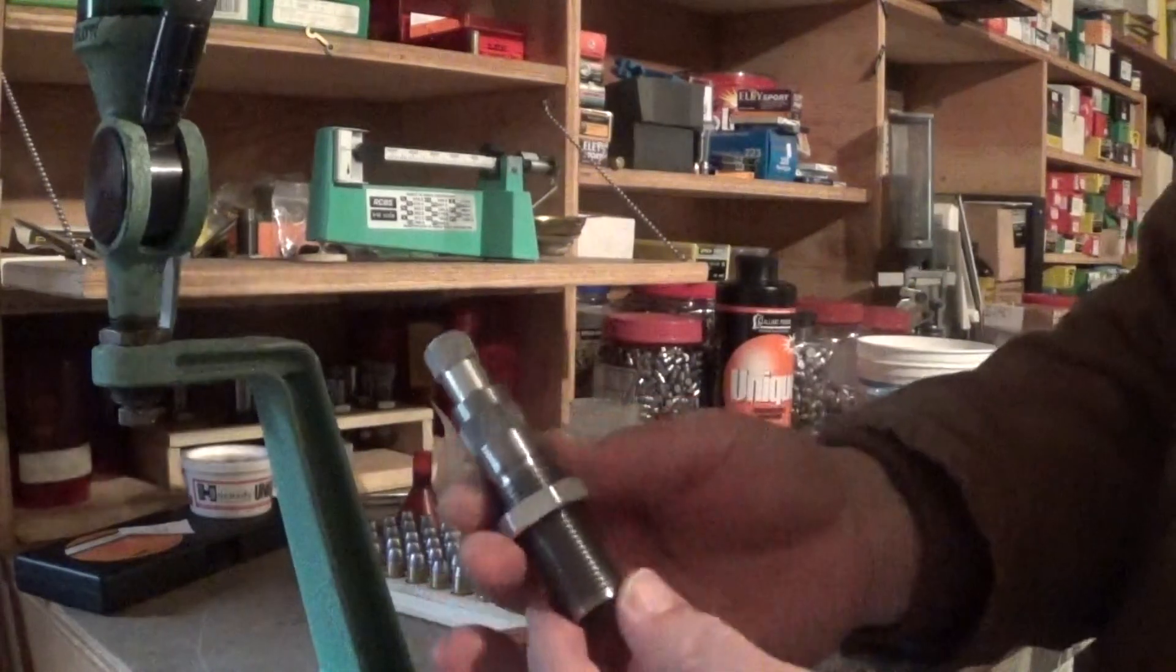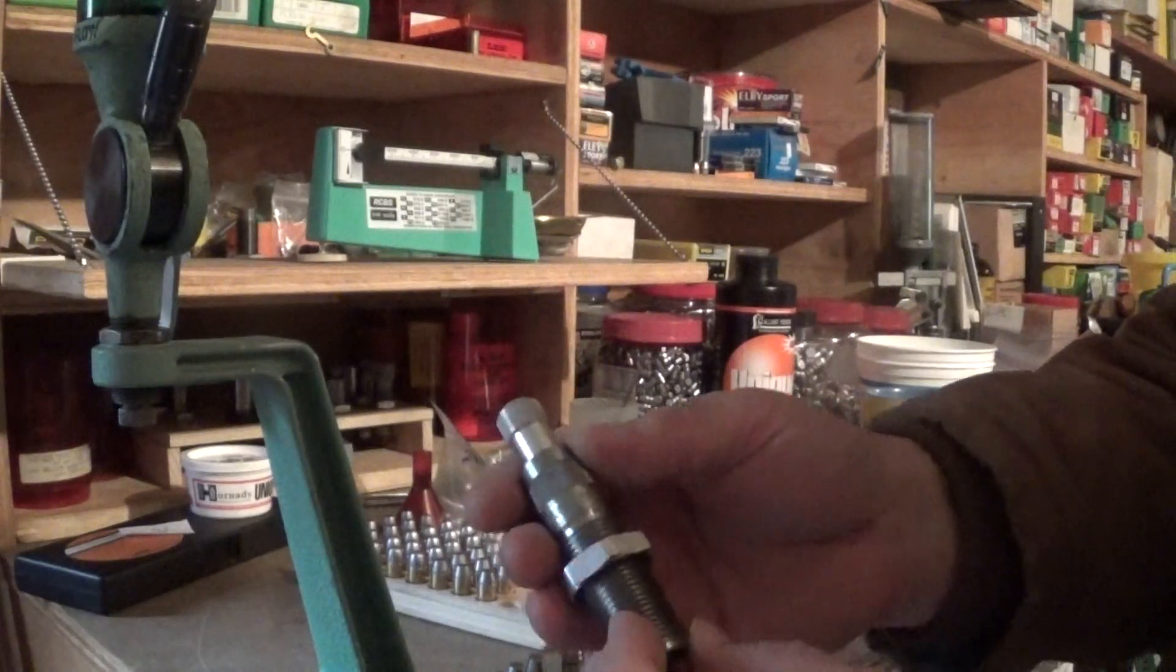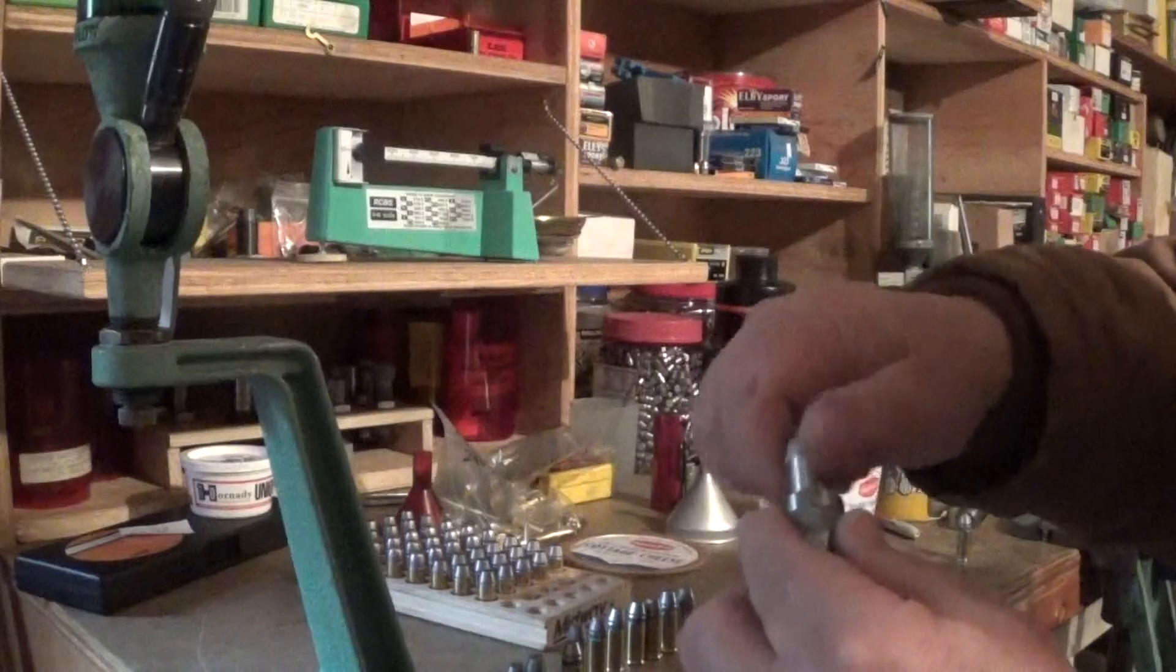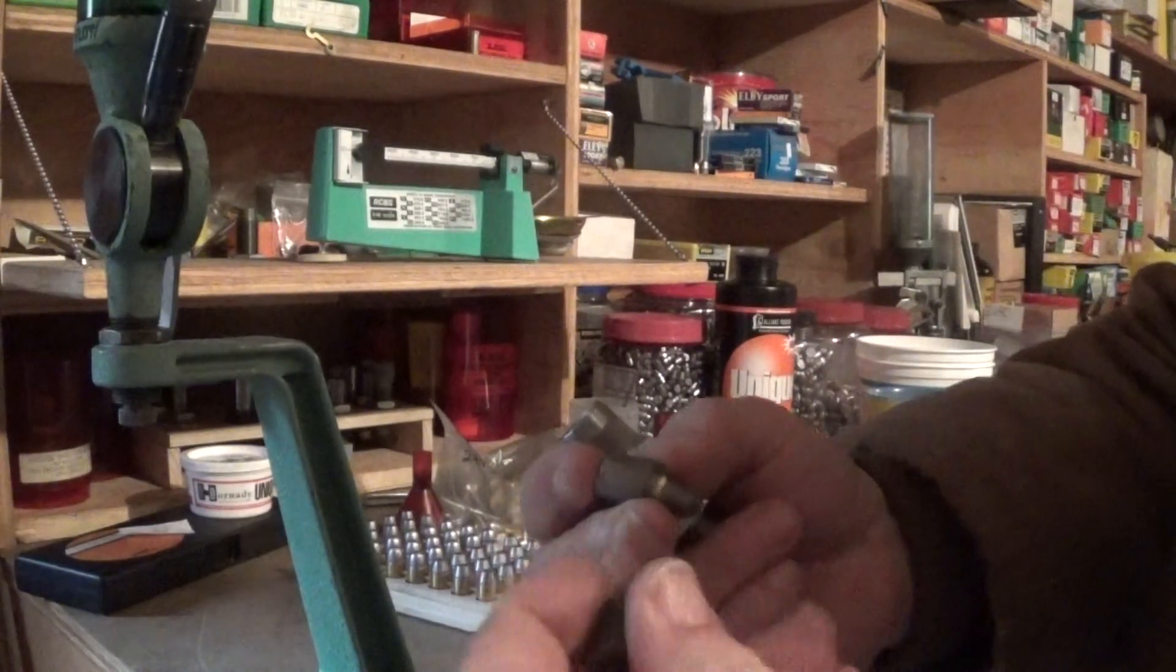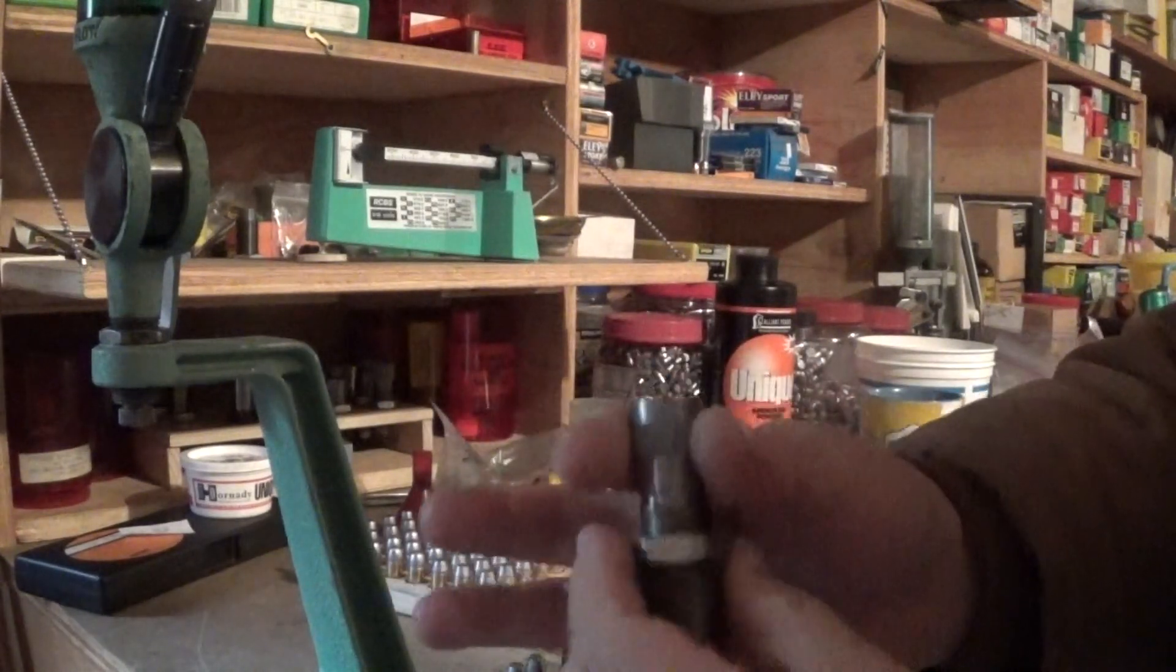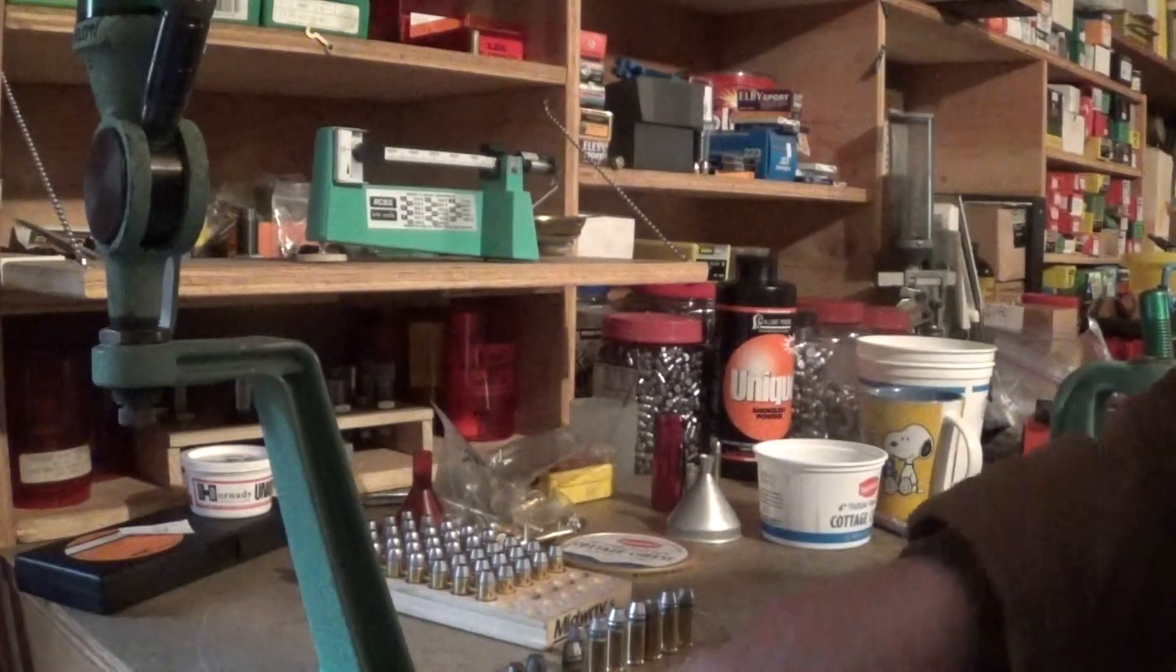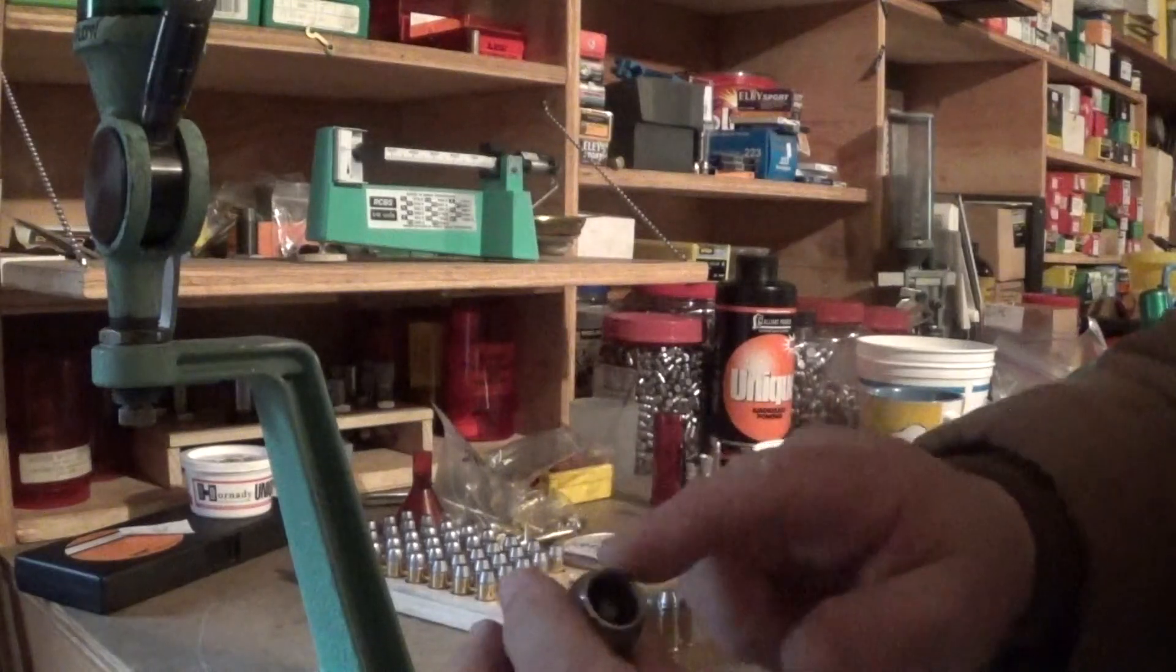Like I said, if you guys don't have one of these yet they're well worth the money. This is the universal expander die that's offered from Lee and it comes with some inserts. What you do is you just set up these inserts in here like that and then you just use your seating stem to adjust it with your lock die to give you the proper flare that you want.